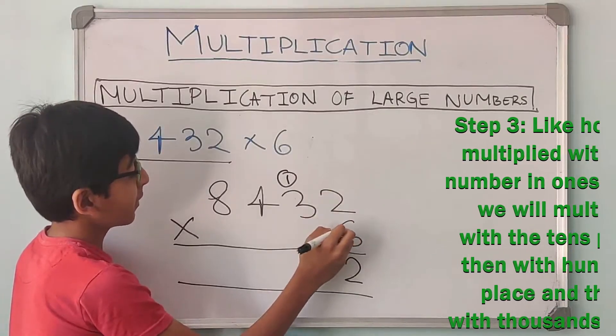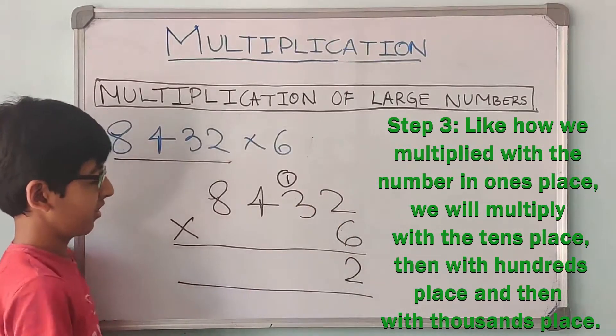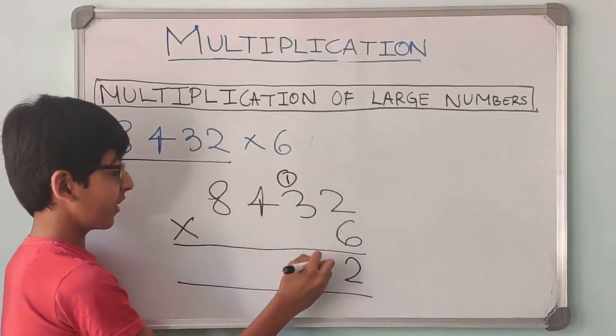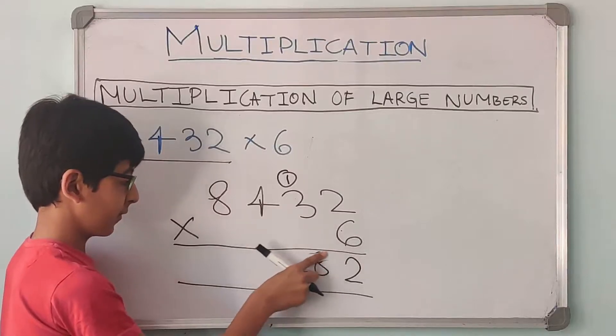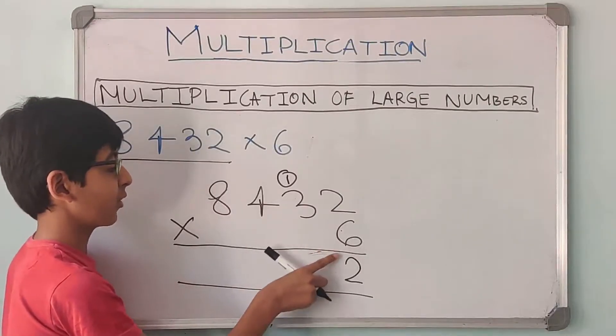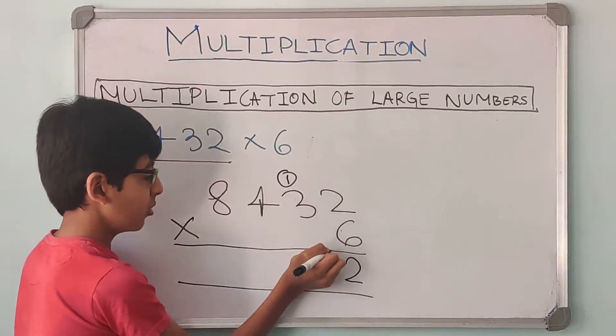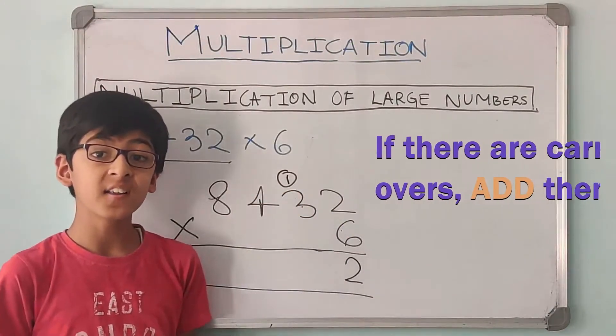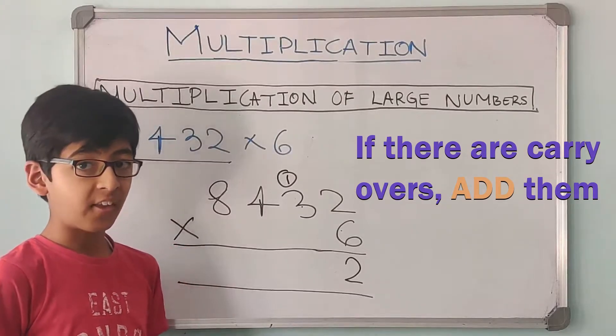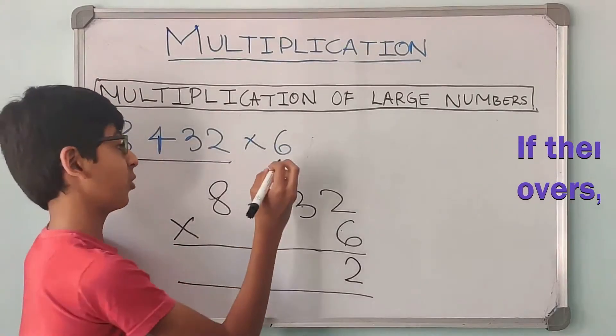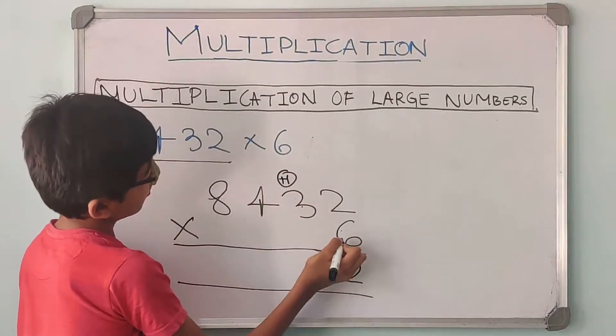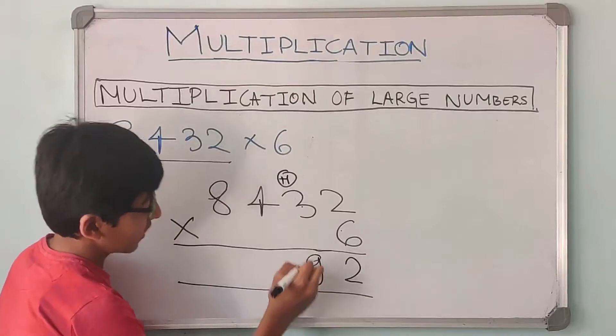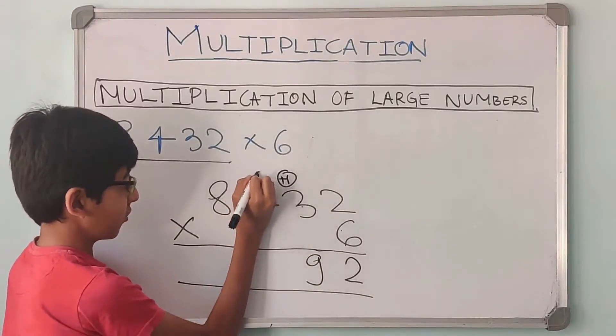Now 6 into 3. Now after this we will multiply this with the tens digit. 6 into 3, 18. We can't write 18 directly over here because there is a carry over 1 also. So always know that we multiply these two, and we always add the carry over. Yes, we add the carry over. So 6 into 3, 18, plus 1 is 19. 9 comes down and 1 carry forward.